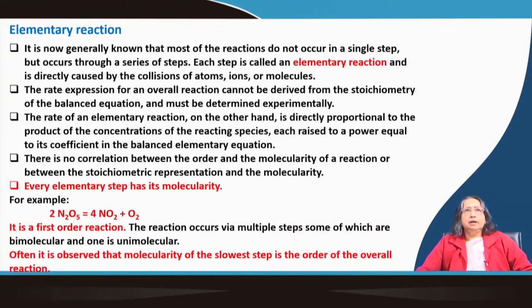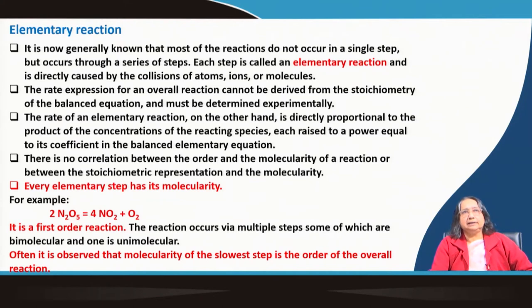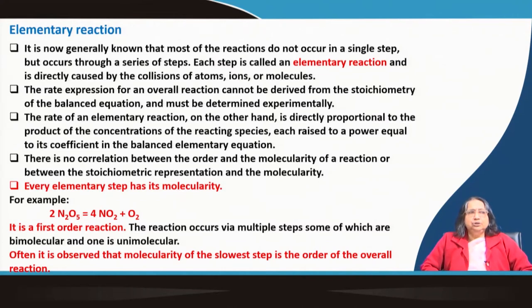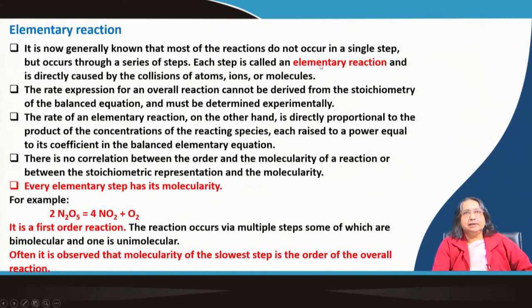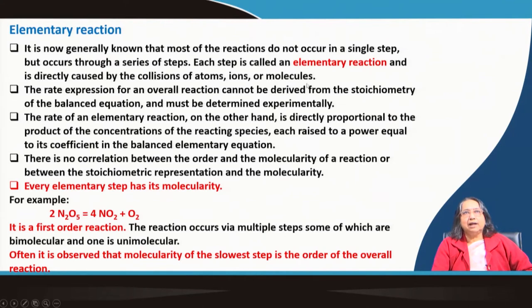What is an elementary reaction? This is very important to understand the mechanism of a chemical reaction. It is generally known that most reactions do not occur in a single step. While in school we only showed the balanced equation, when talking about mechanism we must consider the various steps, because most reactions occur through a series of steps — maybe 2, 3, 4, or 5 steps. Each step is called an elementary reaction and is directly caused by the collision of atoms, ions, or molecules, which must have sufficient threshold energy — that is, activation energy.